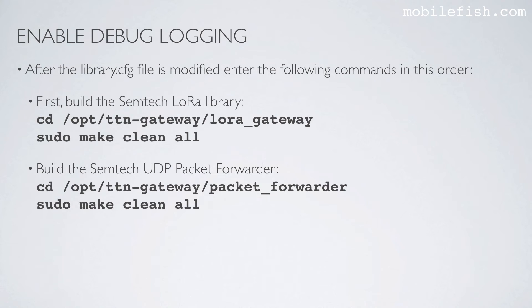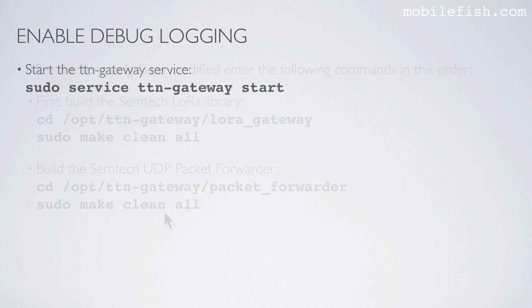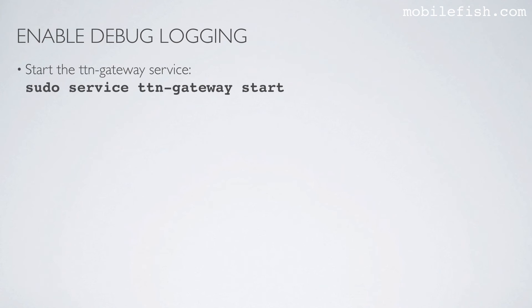Next, build the Semtek UDP packet forwarder — enter this command, followed by this command. Next, start the TTN gateway service by entering this command.